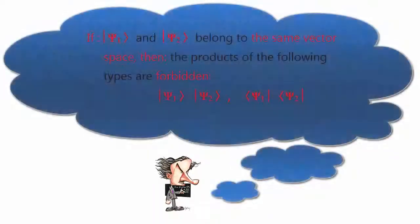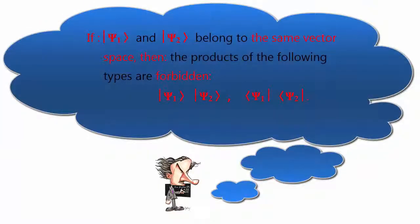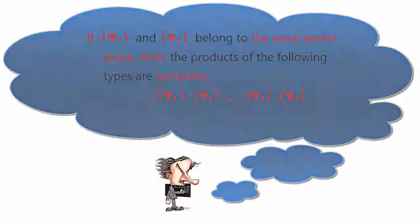Forbidden quantities: If ket |ψ₁⟩ and ket |ψ₂⟩ belong to the same vector space, then the products of the following types are forbidden: ket |ψ₁⟩ ket |ψ₂⟩, bra ⟨ψ₁| bra ⟨ψ₂|.